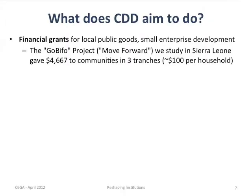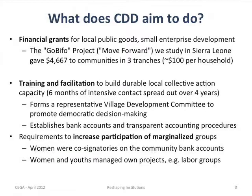So what did the program do? First of all, it was called GOBIFO, which means 'go forward' in Krio, the lingua franca in Sierra Leone. There were three components. The first was financial grants — about $4,700 provided to each community over the course of a few years, which is about $100 per household in a place where per capita household income was only $300 a year. So this was real money going to be spent on improving local public services.